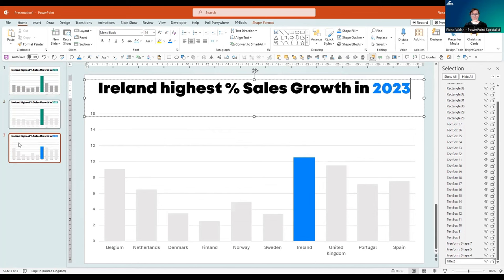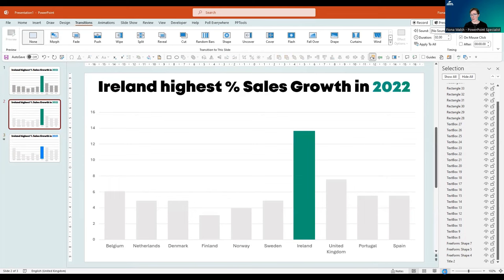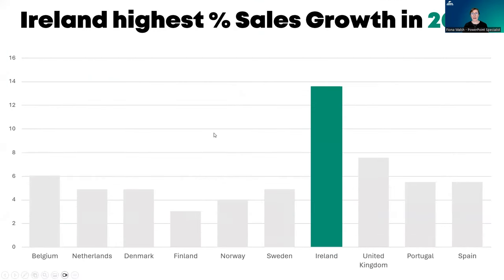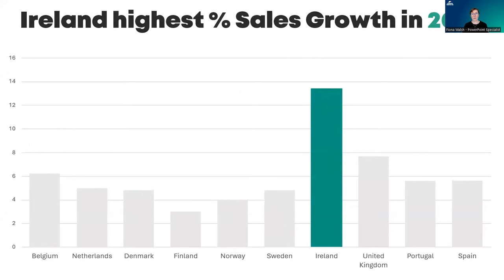What I now need to do is apply the Morph transition to the second slide. So if I go to Transitions and click on Morph, that's then going to morph the items on the second slide. Let's click here and play this one — and then we have that lovely effect as they're morphing from one to another.